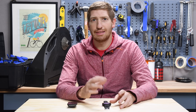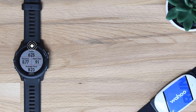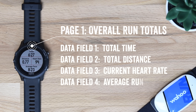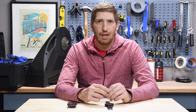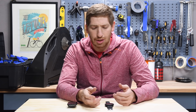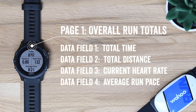Starting off on the running side of things, things tend to be divided into the entire run and then a portion of the run. For the very first screen, I've got my timer field, distance field, heart rate, and average pace. I want to know my total time, total distance, and my current heart rate — not average heart rate, which is not a super valuable metric for me. Average heart rate is too delayed to be of any use in most cases.